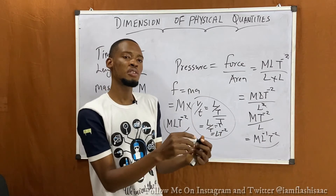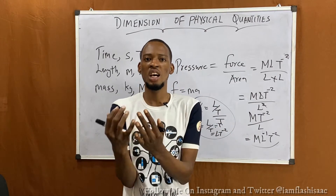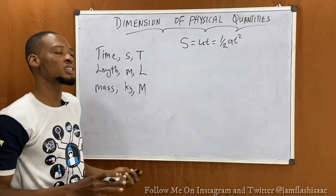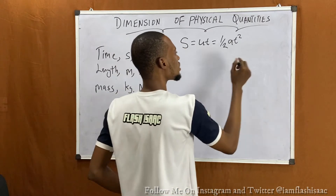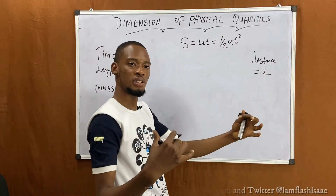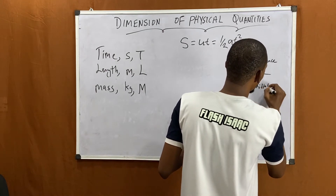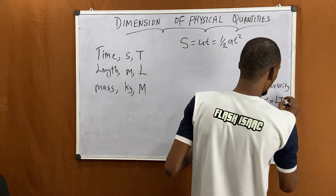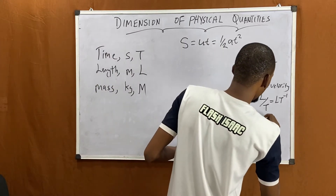The importance of dimension is that it helps us know whether an equation is correct or not. Let's look at this equation and use dimension to check: s = ut + ½at². Let s equal distance, and distance is length, so s has dimension L. U is initial velocity, and velocity is displacement over time, which is L over T — so L·T⁻¹. T is time, which has dimension T.